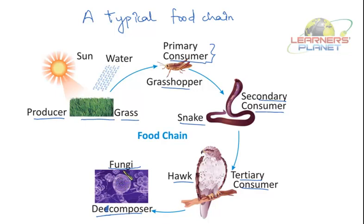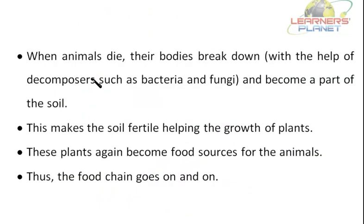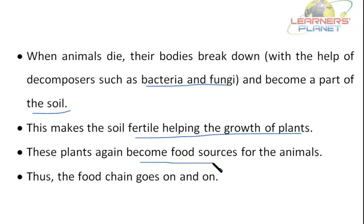Green plants are called the producers as they can produce their own food. Animals are called consumers since they cannot produce their own food, and that is why they depend on plants and other animals for food. When animals die, their bodies break down with the help of decomposers such as fungi and bacteria. They become part of the soil, making the soil fertile and helping in the growth of plants. These plants again become food sources for the animals, and thus the food chain goes on and on.